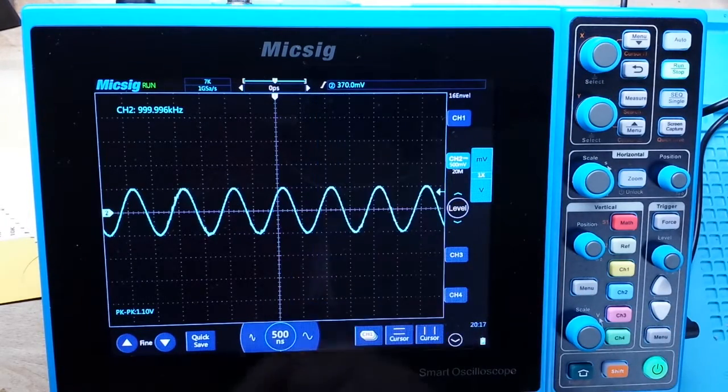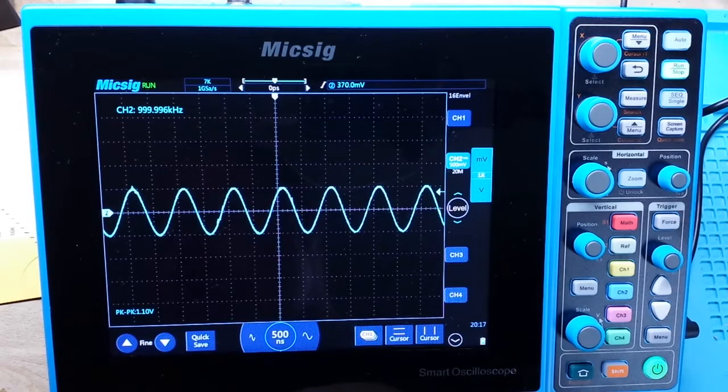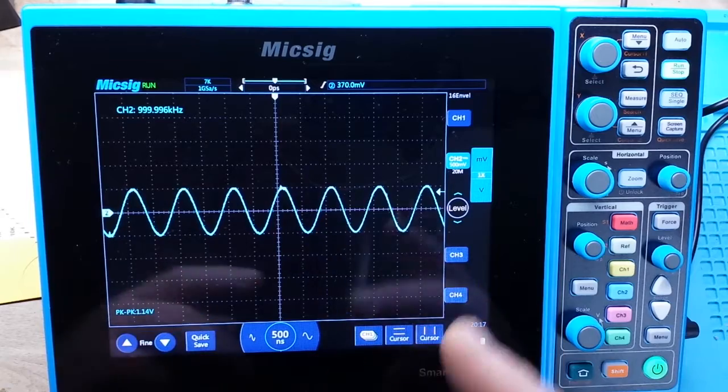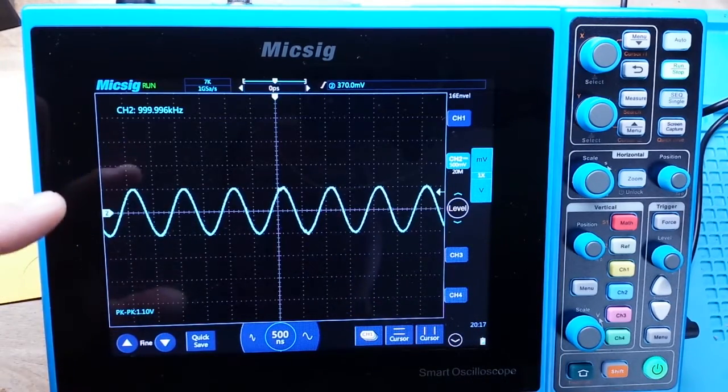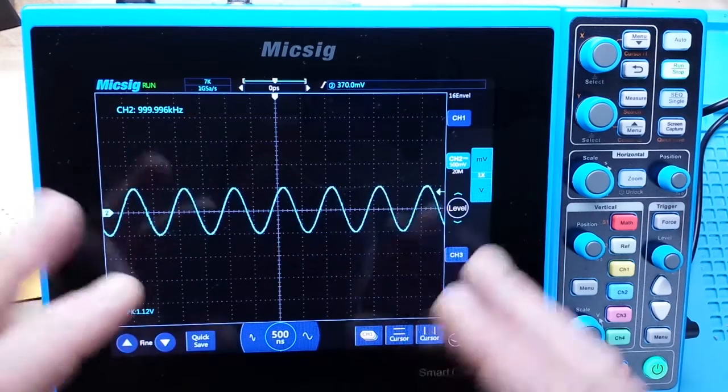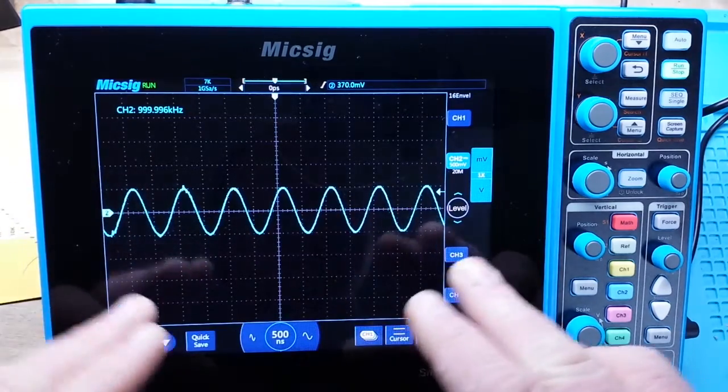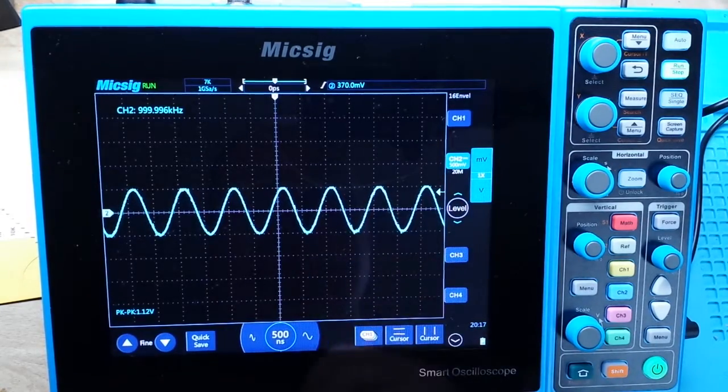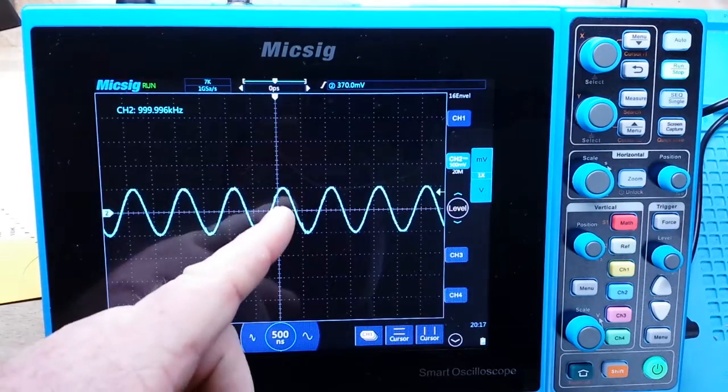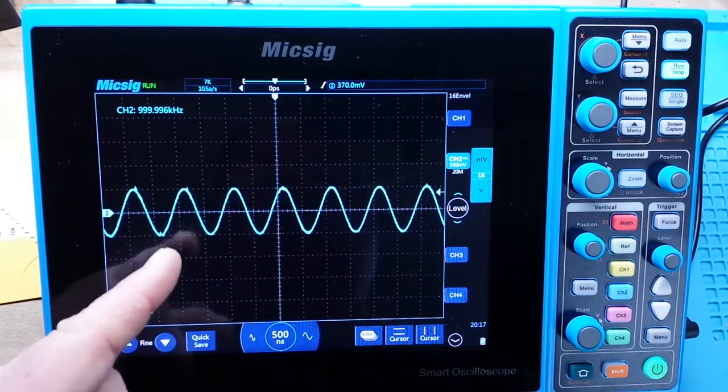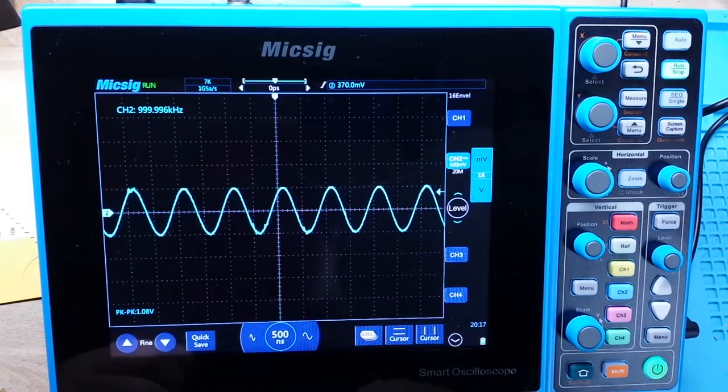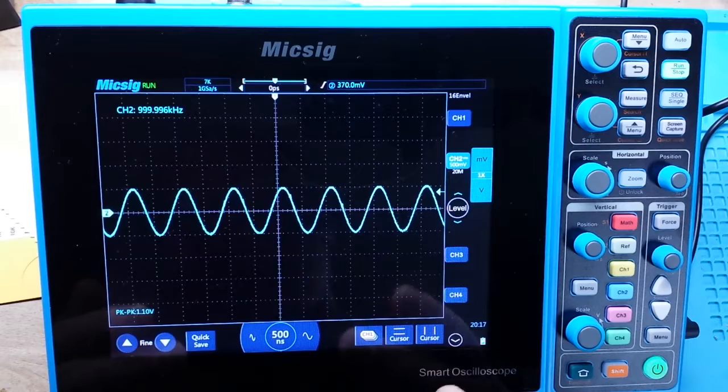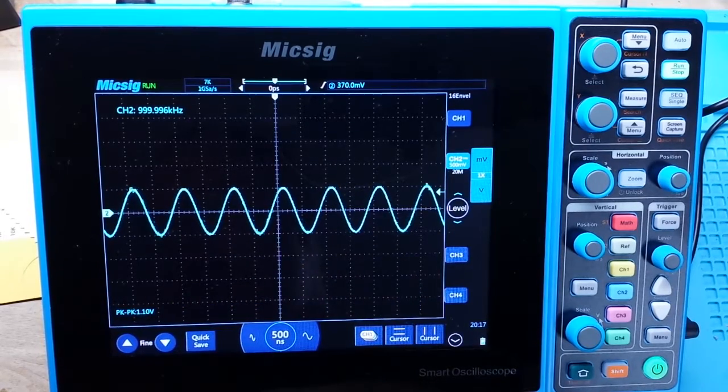Next we have envelope mode. Envelope mode is a lot like peak detect and averaging mode. What it does is it basically combines your peak detect where you're looking at the minimum and maximum, and the average mode where we're looking at the minimum and maximum over many samples, and then it plots them together. So you can see while we are getting a little bit of that random noise, we're also getting more points in our signal, so it's giving us more. But again it's not particularly a useful mode that you want to use for a repeating signal.